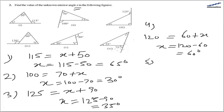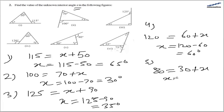In the fifth part, the exterior angle is 80 degrees, and the opposite interior angles are 30 and x. So x is equal to 80 minus 30, which is 50 degrees.